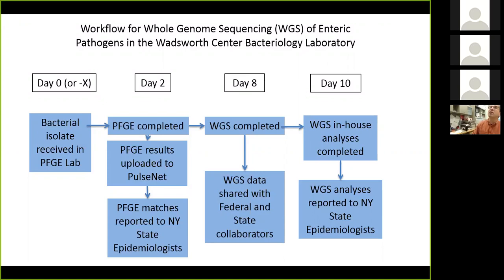This is the current timeline. Bacteria received in the lab goes through the regular PFGE process, and you get data within two to three days. This parallel whole genome sequencing is completed by around day eight. The data are shared with collaborators — FDA, CDC, and other states like Minnesota — and then by day 10 the in-house analyses are completed. That's still considerably longer than our PFGE pipeline, but it really is a question of scale.